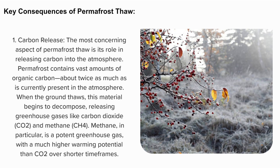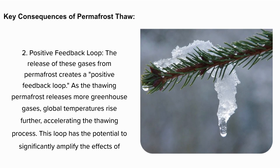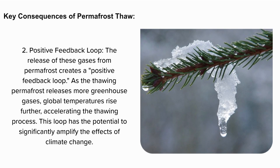Methane, in particular, is a potent greenhouse gas with a much higher warming potential than CO2 over shorter timeframes. 2. Positive Feedback Loop. The release of these gases from permafrost creates a positive feedback loop. As the thawing permafrost releases more greenhouse gases, global temperatures rise further, accelerating the thawing process. This loop has the potential to significantly amplify the effects of climate change.